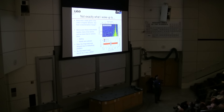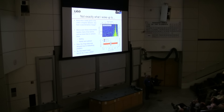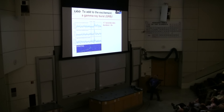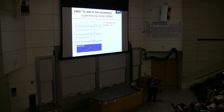Another problem: the Virgo data was delayed due to some network issue, so we had to scramble to get that — it took a good 15 to 20 minutes. We were in a huge rush because we wanted to point telescopes. But there was something else: there was also a gamma-ray burst 1.7 seconds later. Our heads were exploding. I was on shift that day — it was my job to tell the astronomers where to point.